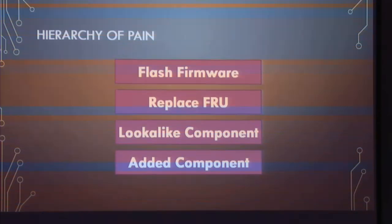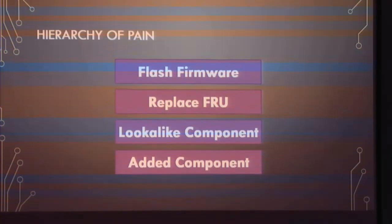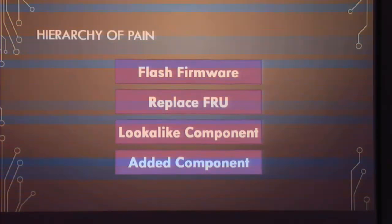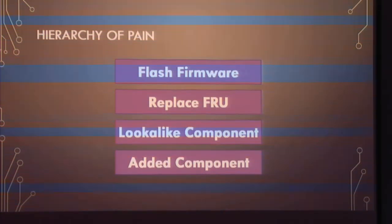This brings me to a hierarchy of difficulty. Adding components and making lookalike components is stunningly difficult and expensive — you have to insert yourself early in the manufacturing process and compromise many parts of trust to get the component into the supply chain. Other options — replacing field-replaceable units and flashing firmware — are considerably easier. It's considerably rarer for someone to have that level of manufacturing and supply chain control over FRUs, which are often procured at lowest cost and swapped by field technicians with parts you don't even know what they are.